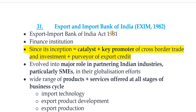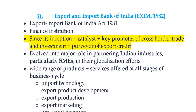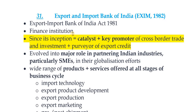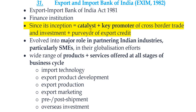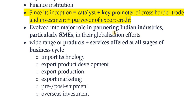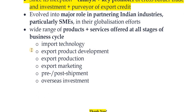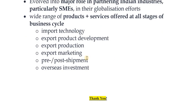The Export and Import Bank of India — Exim Bank — was established through the Export and Import Bank of India Act, 1981. It is a finance institution that has been a catalyst and key promoter of cross-border trade and investment and a provider of export credit. It has evolved into a major role in partnering Indian industries, particularly small and medium enterprises, in their globalization efforts. It offers a wide range of products and services at all stages of the business cycle, including import of technology, export product development, export production, export marketing, pre- and post-shipment credit, and overseas investment.